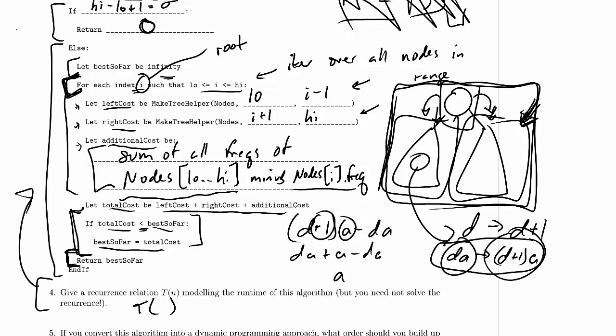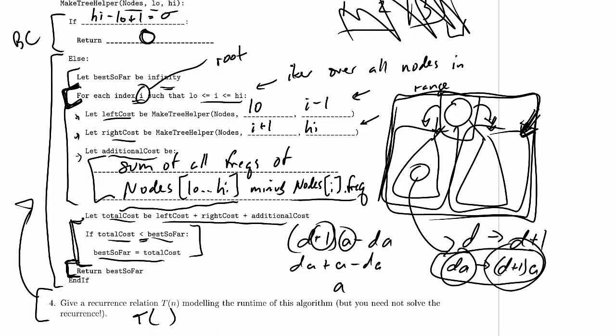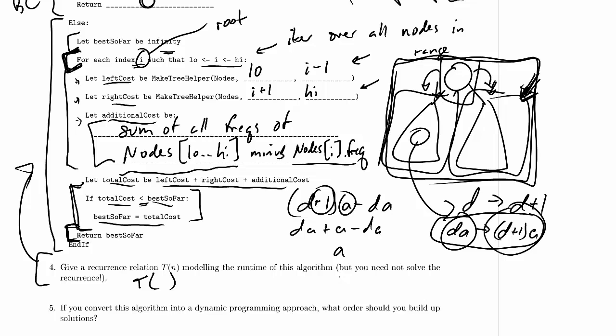We need a base case, this is clearly the base case up here, and that base case takes constant time to run and the base case is when high minus low plus 1 is equal to 0. We'll just let high minus low plus 1 so that'll make it easier to do the analysis. In that case our base case t of 0 is equal to constant time.